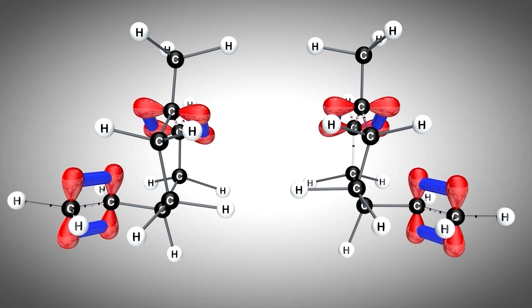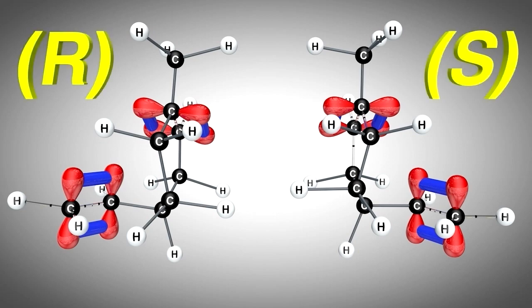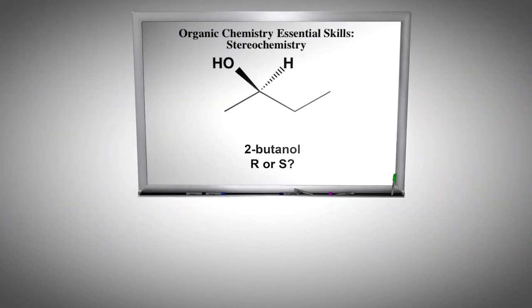To differentiate between the two similar molecules, we must use the stereochemical modifiers R and S. The first step is to identify the chiral center, an atom with four different groups attached to it, which is indicated by the arrow.